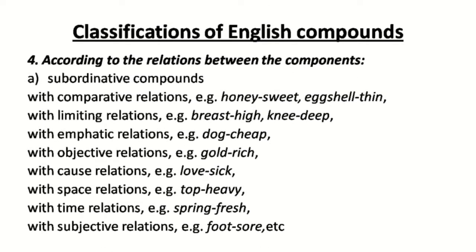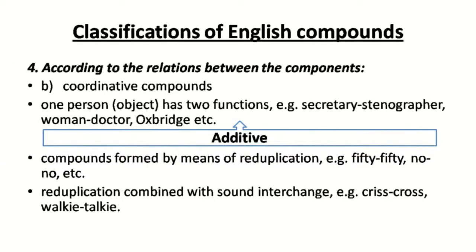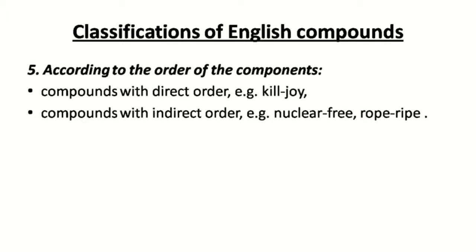Classification according to the relation between components identifies subordinative compounds, which are subdivided into those with comparative, limiting, emphatic, objective, causal, space, time, and subjective relations. Co-ordinative compounds are also recognized — in these, one person or object has two functions, like 'secretary-stenographer' or 'woman doctor'. There are also compounds formed by means of reduplication and reduplication combined with sound interchange. Finally, compounds can be classified by order: those with direct order and those with indirect order.